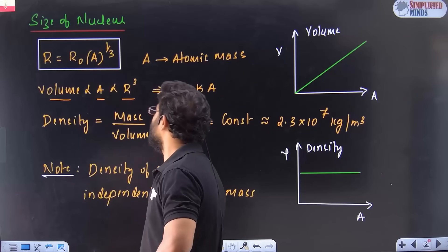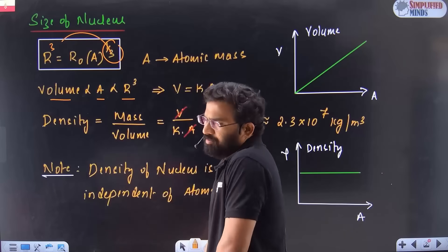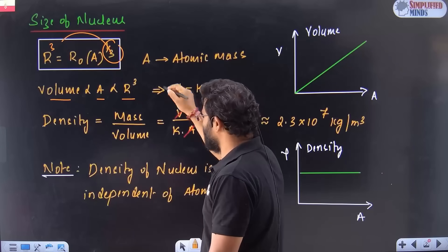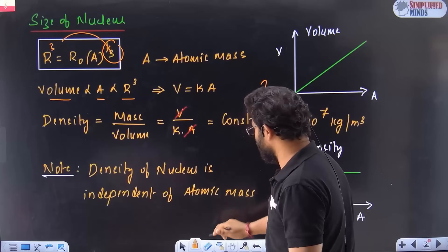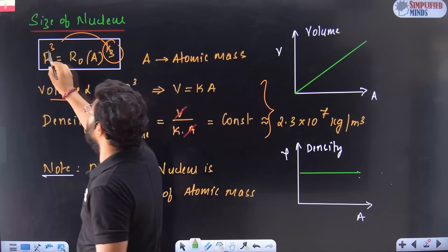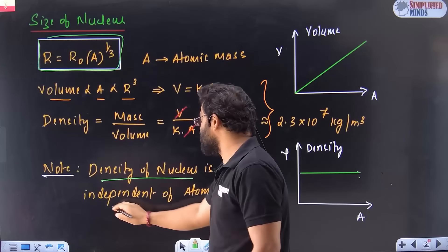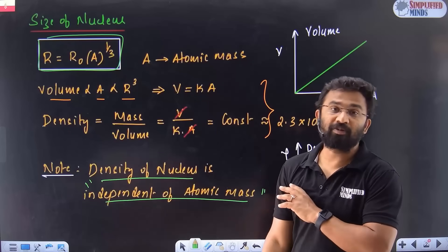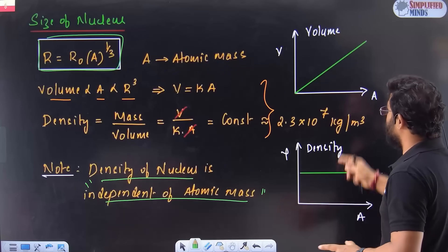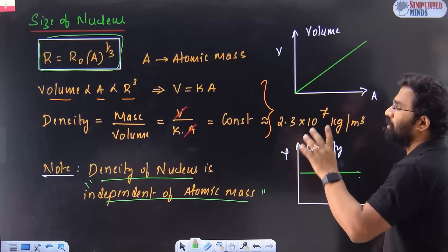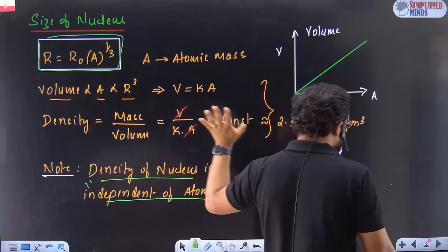But even I see now, recently when I see a model paper, there are questions. So that is based on R is equal to R₀ into A to the power of 1 by 3. I will solve the questions on this. And volume is proportional to atomic mass. Obviously proportional to A. R cube proportional because if 1 by 3 and you can shift, this is R cube. The volume is proportional to atomic mass obviously, and that is proportional to R cube. This was from my CET notes. So as per board exam point of view, just remember this formula. Density of the nucleus is always independent of the atomic mass.